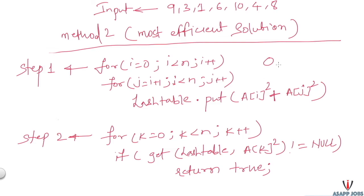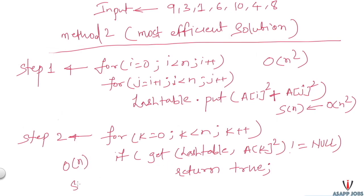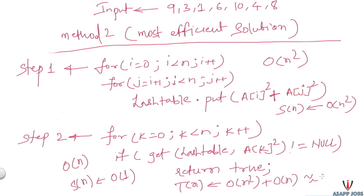For the hash table approach: filling the hash table uses two for loops each going to n, so step one takes O(n²) time and O(n²) space. Step two iterates over the array once and accesses the hash table in O(1), giving O(n) time and O(1) space. Overall, total time complexity is O(n²) + O(n) = O(n²), and total space complexity is O(n²) + O(1) = O(n²).